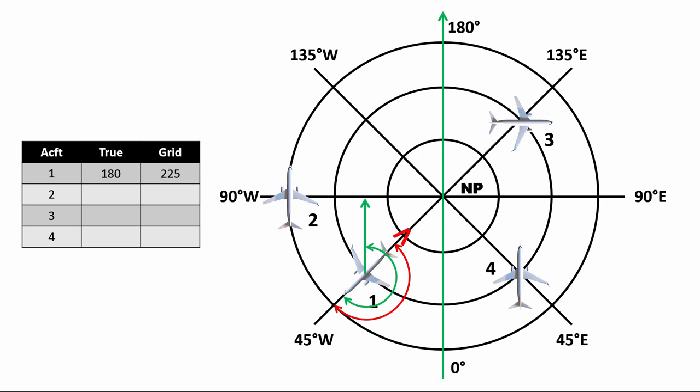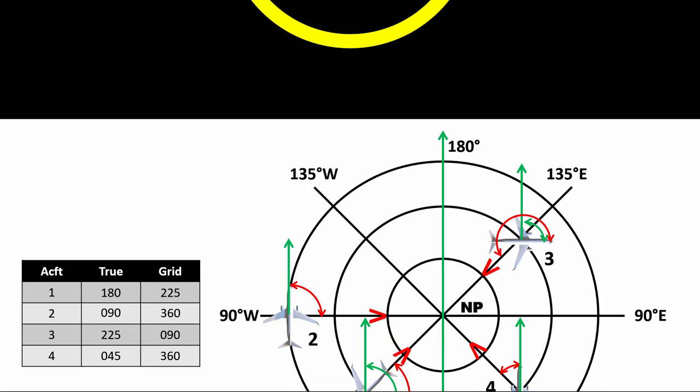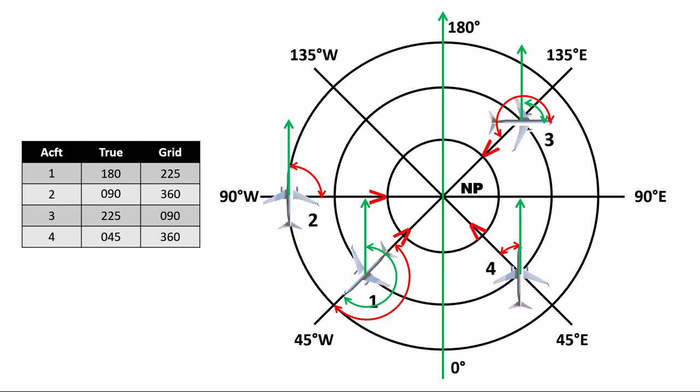I suggest you pause the video and calculate the true heading and grid heading for aircraft 3 and 4. The answer will be given after you resume. For the third aircraft, true heading is 225 degrees and grid heading is 90 degrees. For the fourth aircraft, true heading is 45 degrees and grid heading is 360 degrees.